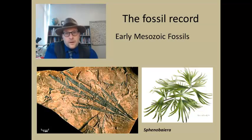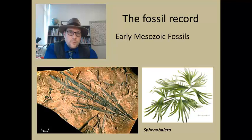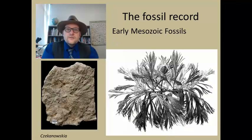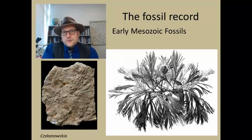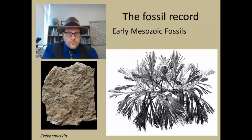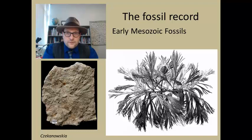This is Sphenobaiera, known from the early Jurassic of China. It is also found throughout the Mesozoic of Eastern Europe and Asia, Greenland, and has even been reported from the late Jurassic and Cretaceous of North America. The next fossil ginkgo is the bushy-leaf Baiera, found throughout the Mesozoic of Eurasia and particularly speciose in the fossil record. In 1994, the well-known paleobotanist Sidney Ash described specimens from the late Jurassic Morrison Formation here in the United States.